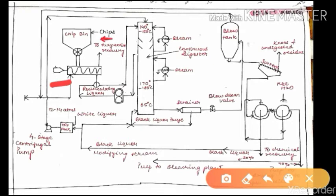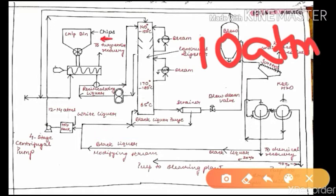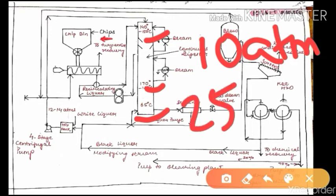Then the chips move into the preheaters. In the preheater they are given a certain temperature and become softer. Most of the important things happen in the next vessel — the digester. The chips are taken from the preheater into the digester. Digesters are large pressure cookers operating at about 10 atmospheres pressure. They are very tall — 25 to 30 meters tall — with different temperature zones.